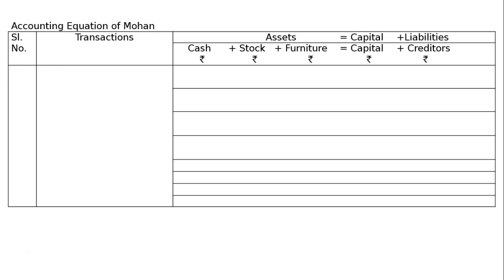First transaction: start business with cash. Cash will increase by rupees 50,000 and capital will increase by rupees 50,000.